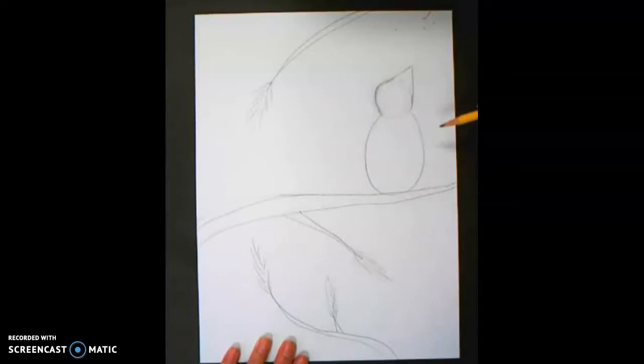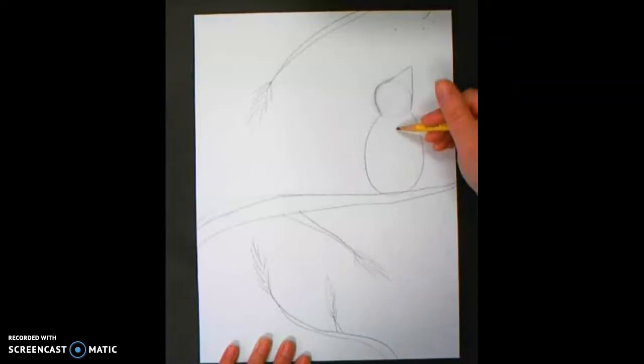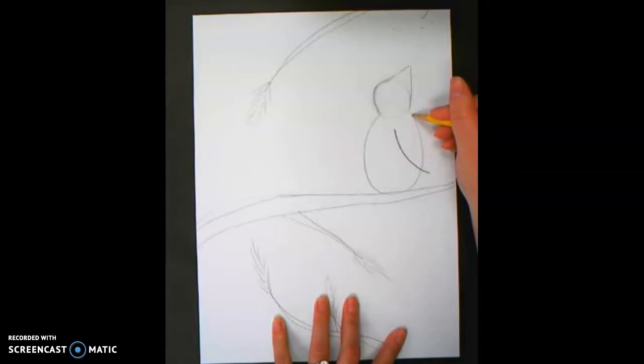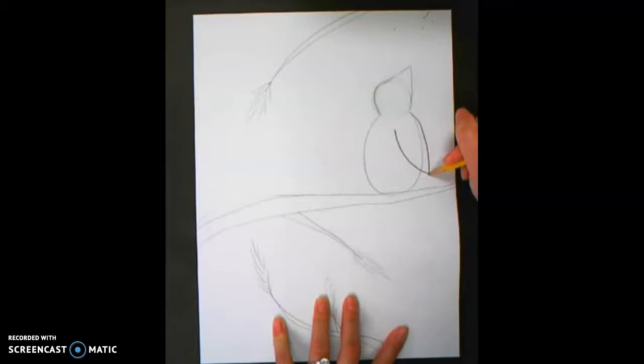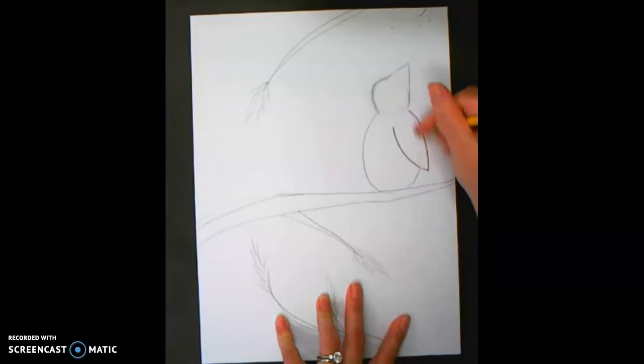Or you can make an elongated triangle shape, like I'm about to show you. So I start in about the middle of his oval body, and I'm going to draw a curve line down. And starting at the top where his kind of shoulder meets his head, another curve line down to make a point. Little wing. And then, as always, erase any lines that you need to get rid of.